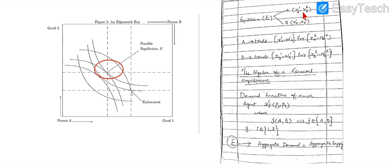We use a handwritten approach to simplify the topic we are starting: the general algebraic solution. At this equilibrium point there are two persons or agents, person A and person B. Person A at the equilibrium point has x1 and x2 options, and agent B is also having x1 and x2.